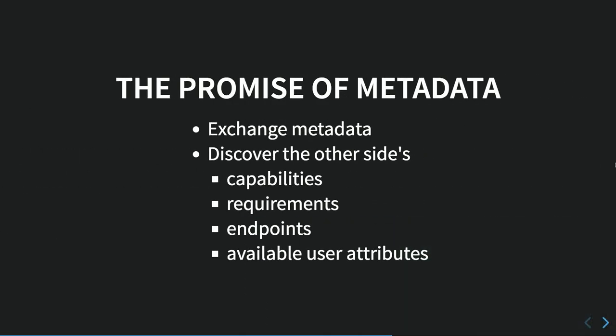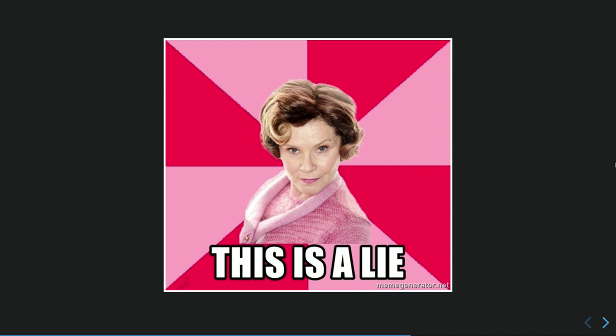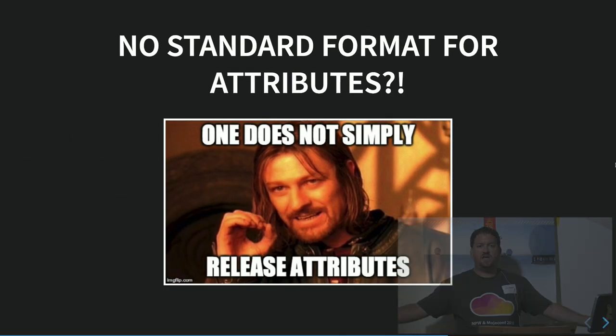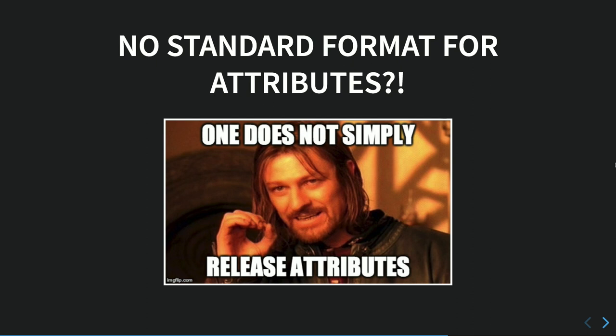The promise of metadata is that you describe yourself and just exchange it with the other side — things like what capabilities you have, how you're going to sign, what the requirements are, what endpoints you hit, what user data is available — and they're supposed to just talk to each other. This is a lie. You cannot just configure the other things, because after hundreds of pages of specs they just skipped the data formats. You're done — the person is authenticated — but what's their username? What's their email address? How do I contact them in any way? I don't know. I hope you know how to talk about those things, because we only had 500 pages of spec — we couldn't possibly have just told you one.